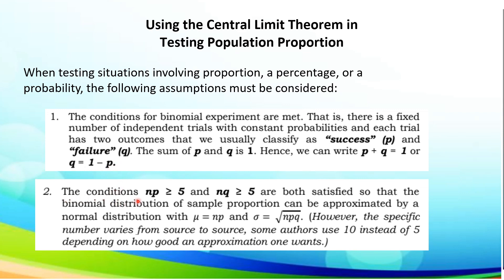The conditions which is the number of samples times p should be greater than or equal to 5, and n times the given q should also be greater than or equal to 5, or both satisfied so that the binomial distribution of a sample proportion can be approximated by a normal distribution with mu equals np and sigma equals the square root of npq. However, the specific numbers vary from source to source. Some others are 10 instead of 5 depending on how good an approximation one wants.